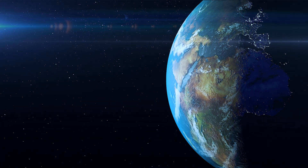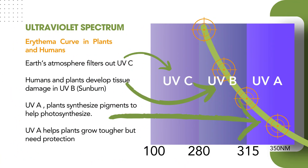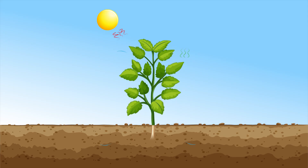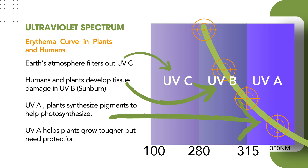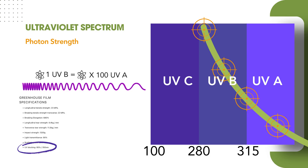Looking at the atherma curve for plants and humans: the Earth's atmosphere filters out UVC almost in totality, so we're pretty safe there even though that's the most damaging. Humans and plants can develop tissue damage in the UVB range. At UVA, plants synthesize pigments to help photosynthesize — UVA helps plants grow tougher, but it still needs protection from the sun. The targets on that atherma line remind us that at every single nanometer point, tissue damage can incrementally and exponentially get stronger. The difference between UVA and UVB: one photon in the UVB spectrum is equivalent to 100 photons in the UVA. This explains the different levels of exposure — getting sunburned on a high UV index day versus just getting a nice tan.